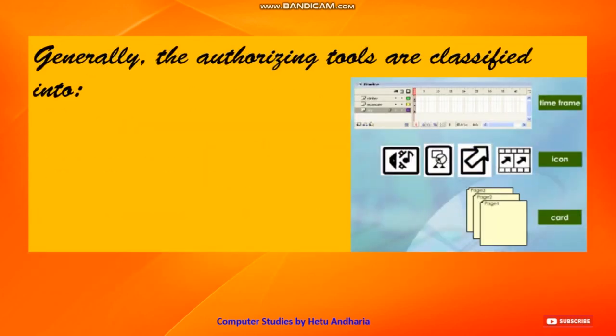Generally, authoring tools are classified into three types. The first is time-based tools — we can say PowerPoint is a time-based tool, where each slide is given a timing and the content placed in that slide is displayed accordingly.